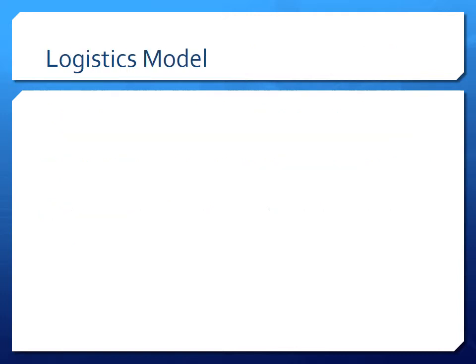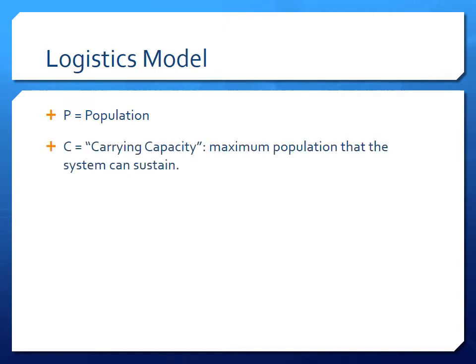The logistic model is a classical model used to simulate the growth of population — not only human but populations of different species, vegetation, and ecosystems. In this model we define a variable P which is our population stock, and we redefine a variable called the carrying capacity, denoted C, which describes the maximum population the system can sustain. The logistic model has this underlying notion that there may be limitations to how much population can grow, and we'll come back to that assumption later.